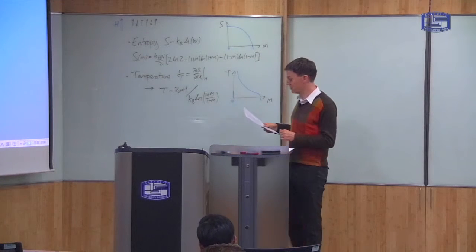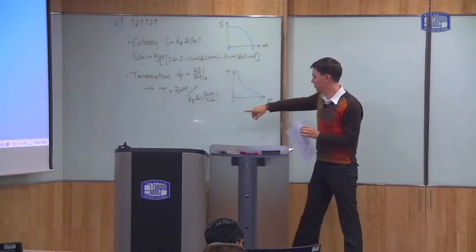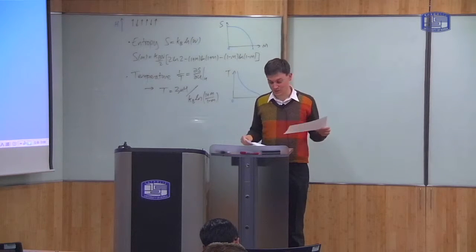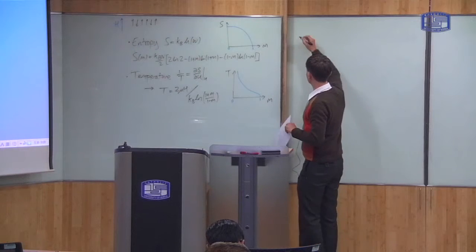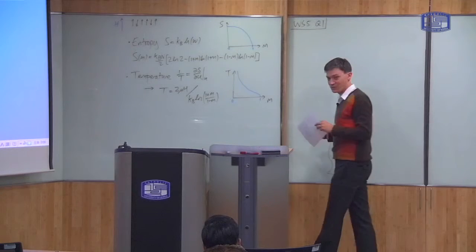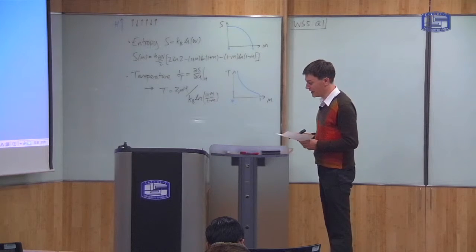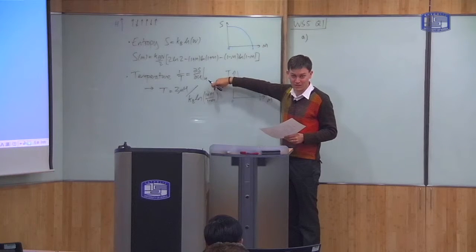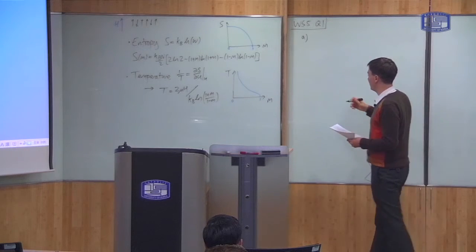This is the content of worksheet 5, question 1, which I gave you last time. The question is all about taking this temperature formula and seeing some consequences. So I'm going to work through that question now. Part A simply says: take this formula and make M the subject — in other words, rearrange to get M equals something. This is just math, so I'll do it quickly.